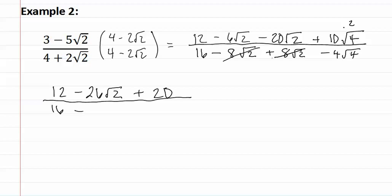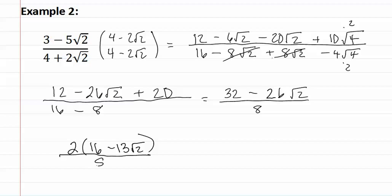Then, we have sixteen minus the square root of four is two, and four times two is negative eight. Twelve plus twenty is thirty-two minus twenty-six root two over eight. We now continue simplifying, but remember we cannot simply just start reducing. We must factor out the common factor in the numerator. Let's factor out a two. This gives us sixteen minus thirteen root two over eight. We can now reduce, two goes into two once and into eight four times. Now, we can rewrite this as sixteen minus thirteen root two over four. This is our final answer.